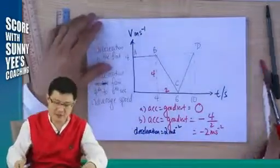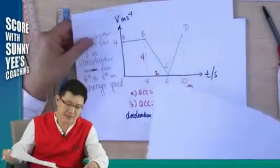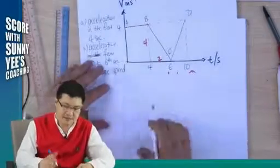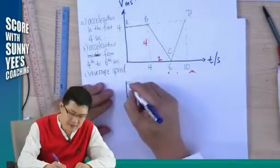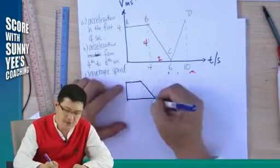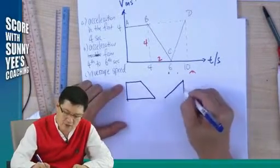And average speed. To find the average speed, you have to find the total distance divided by the total time taken. Now the total distance, clearly you can separate this into 2 diagram. One is a trapezium and one is a triangle.